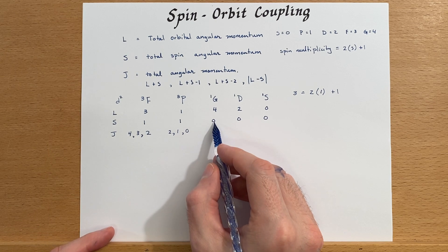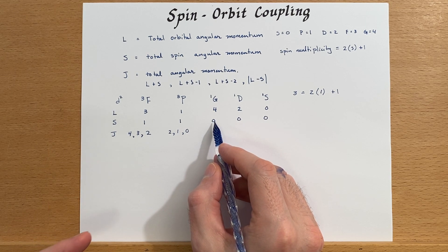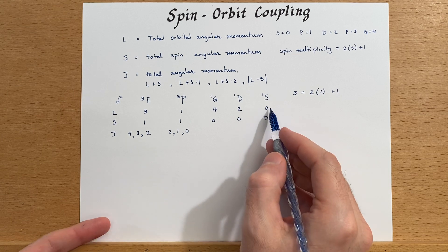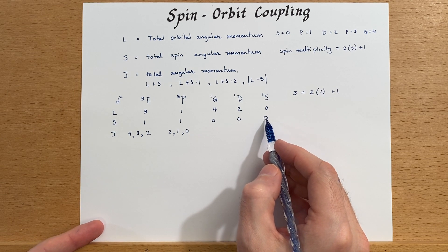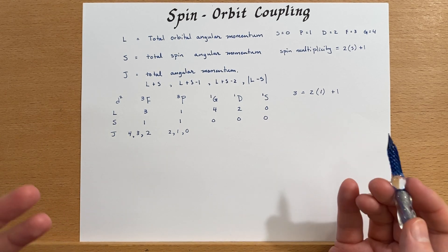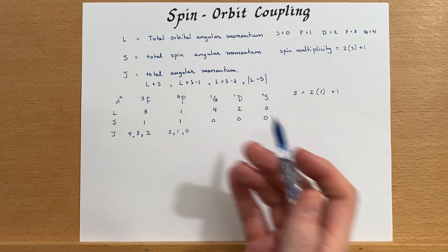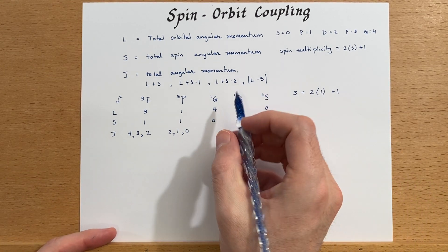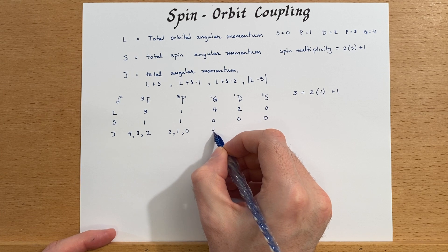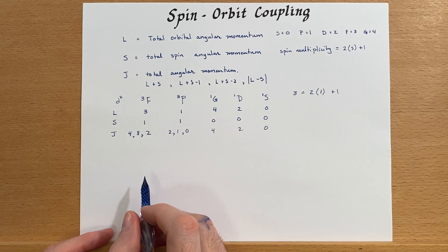In cases where S or L equals zero, there is only one J value, since adding or subtracting zero changes nothing. So for the singlet states — singlet G and singlet D and singlet S — the J values are simply 4, 2, and 0 respectively.